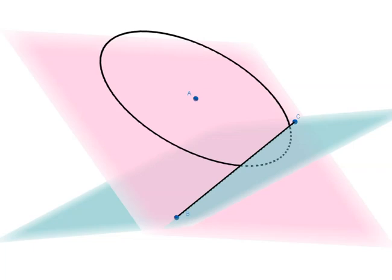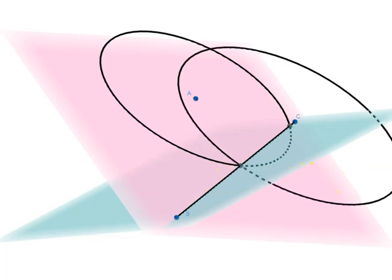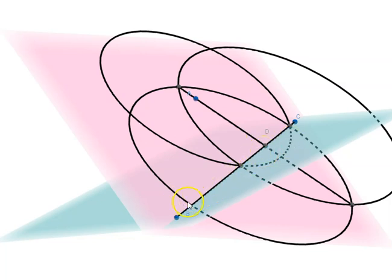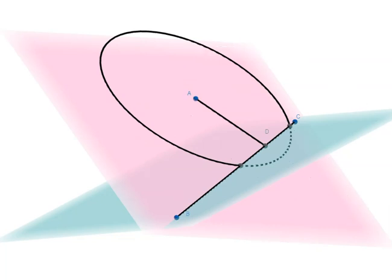Using Book 1 proposition, we draw circles, intersect the points, and join these points, taking the intersection with BC. So now we have AD perpendicular to BC. Let us hide all the elements which are no longer relevant for us.